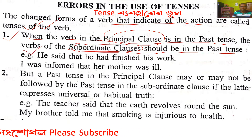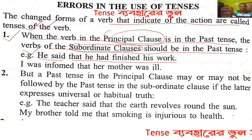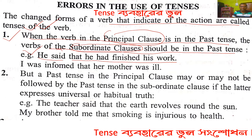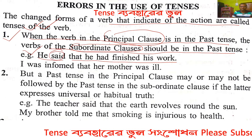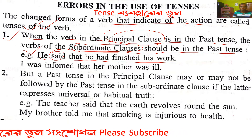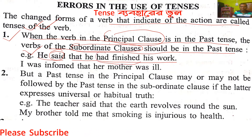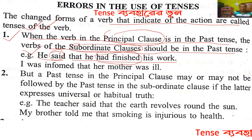Example: 'He said that he had finished his work.' Here, 'said' is the past tense verb in the principal clause. After 'that', the subordinate clause uses 'had finished', which is also past tense. Said — principal clause, had finished — subordinate clause, past tense-e ache.